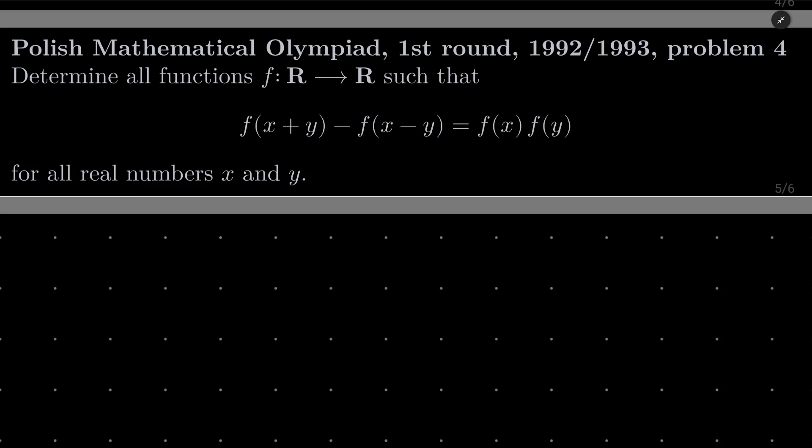The Polish Mathematical Olympiad has 3 rounds. The first takes place at the end of the year and the next 2 rounds are in the next year, so it's edition 92/93. We wish to find all functions f from the set of real numbers into itself, such that f(x+y) - f(x-y) = f(x)f(y) for all real numbers x and y. So it's a rather simple problem.